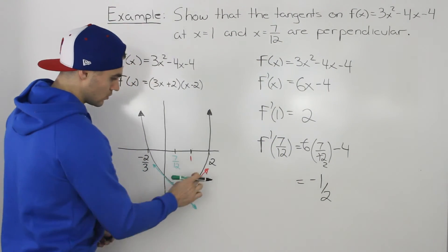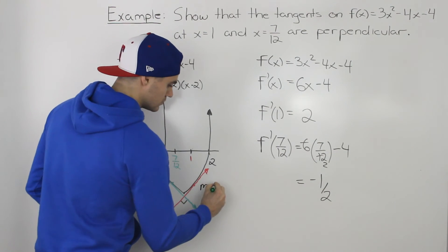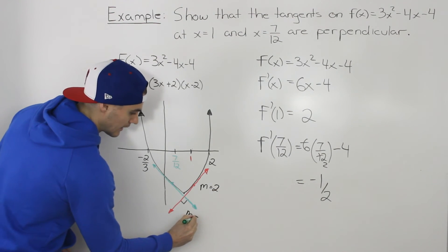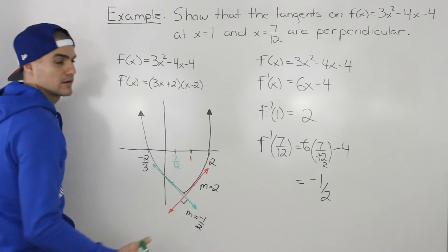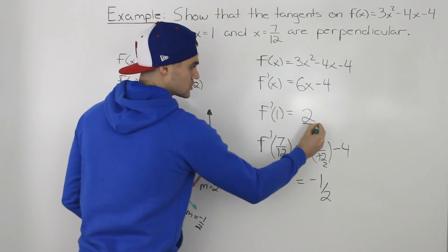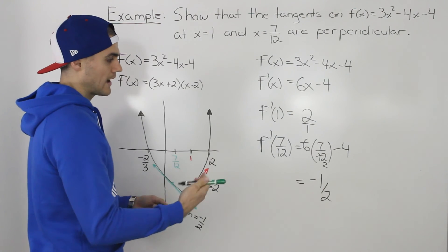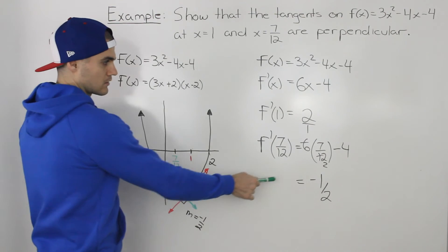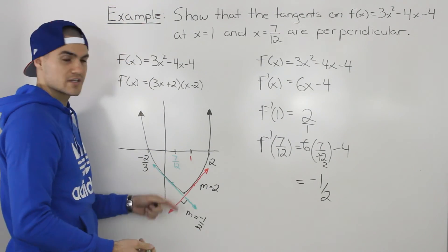So the slope of the red line is 2, and the slope of the green line is negative 1 half. Notice how both of these are negative reciprocals of each other, because 2 is the same as 2 over 1, so the reciprocal of that is 1 over 2, and then adding the negative, we'd get negative 1 half. Because these two slopes are negative reciprocals of each other, we know that these two tangents are perpendicular.